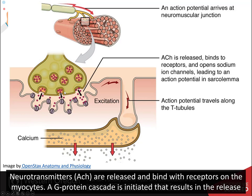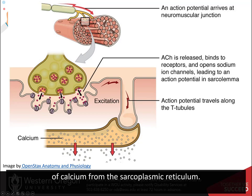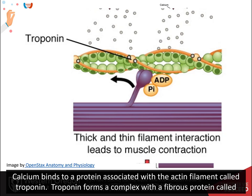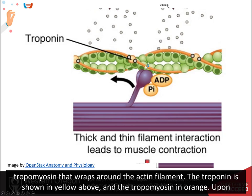Acetylcholine neurotransmitters, ACh, are released and bind with receptors on the myocytes. A G-protein cascade is initiated that results in the release of calcium from the sarcoplasmic reticulum. Calcium is required to initiate muscle contraction. Calcium binds to a protein associated with the actin filament called troponin, which forms a complex with a fibrous protein called tropomyosin that wraps around the actin filament.